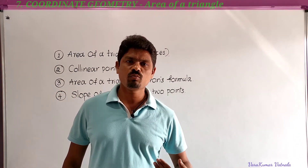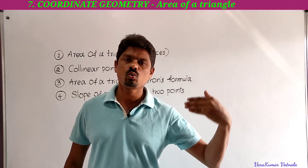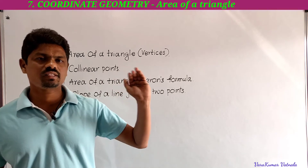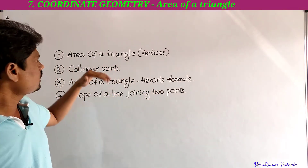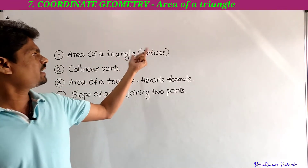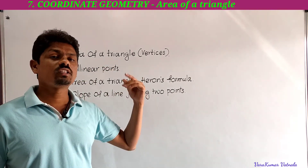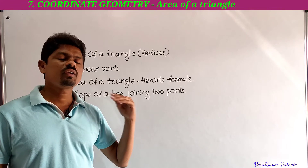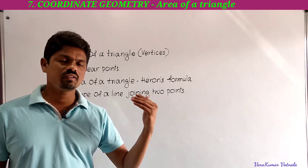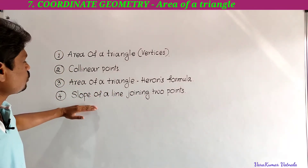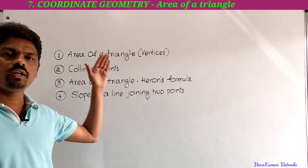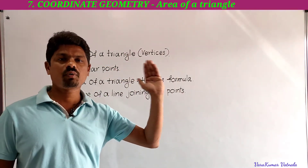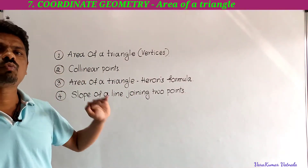Welcome to the channel Learn More Maths. We have completed exercise 7.2 in the previous video. Now we have to learn about four topics to solve problems in exercise 7.3 and exercise 7.4: area of a triangle when vertices are given, collinear points, area of a triangle using Heron's formula, and slope of a line joining two points.